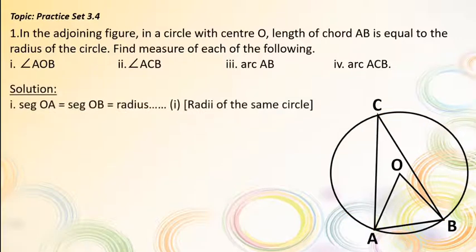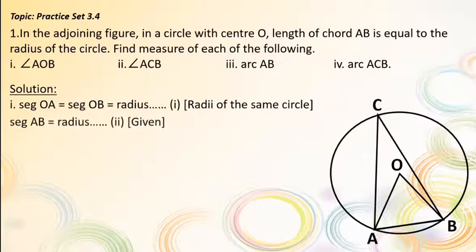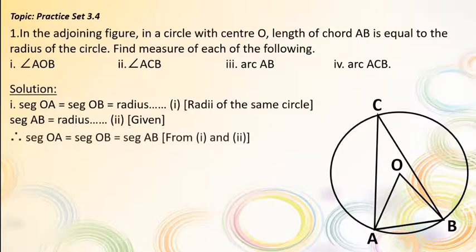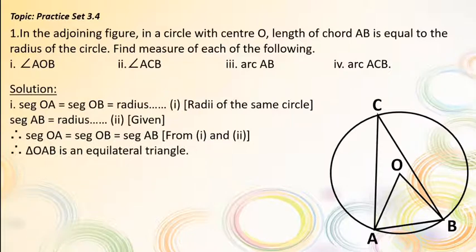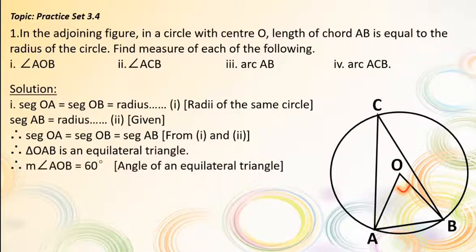Solution. Segments OA and OB are radii of the same circle. Therefore, segment OA = segment OB = radius. Also, segment AB = radius. Therefore, segment OA = segment OB = segment AB. Therefore, triangle OAB is an equilateral triangle. Since every angle of an equilateral triangle is 60°, the measure of angle AOB is equal to 60°.